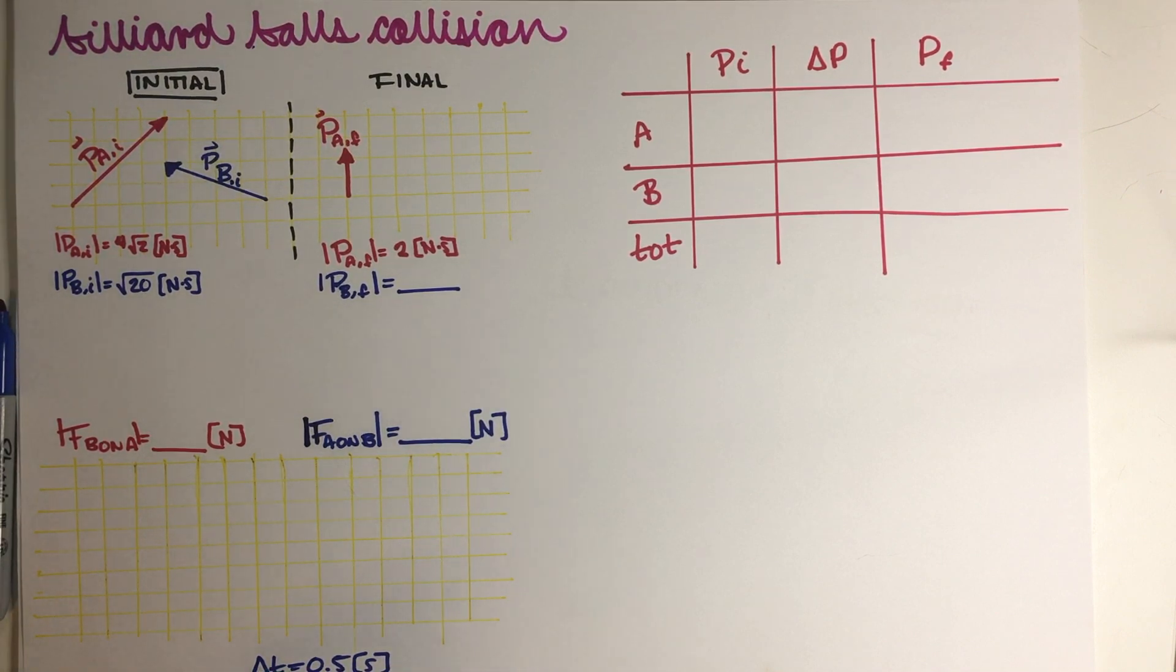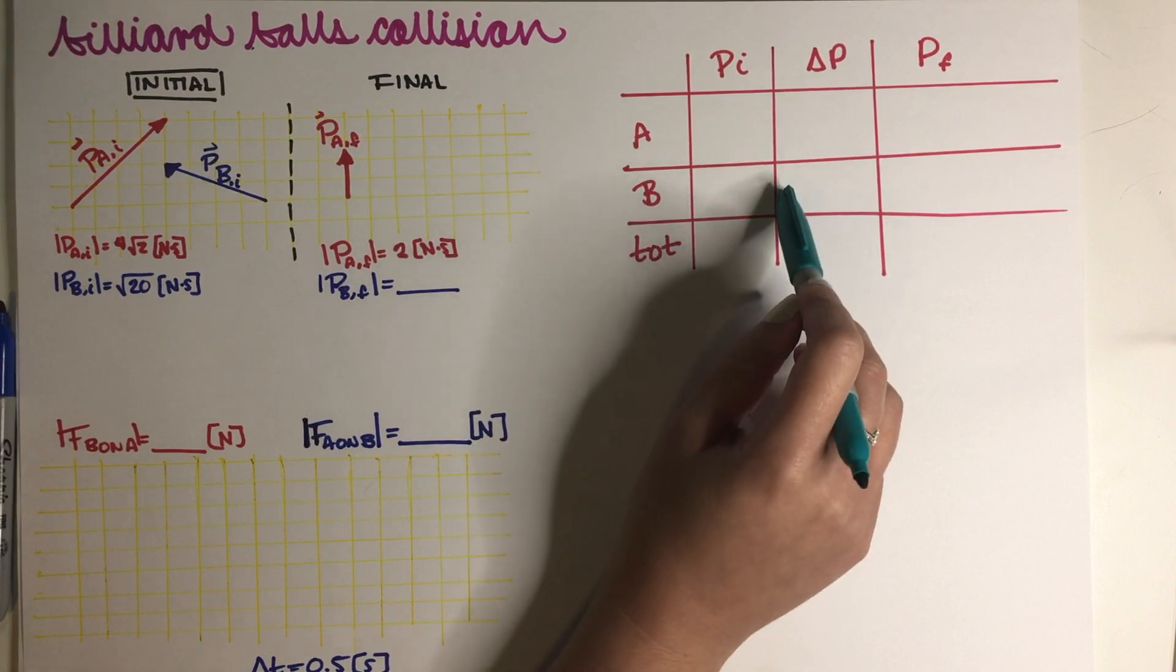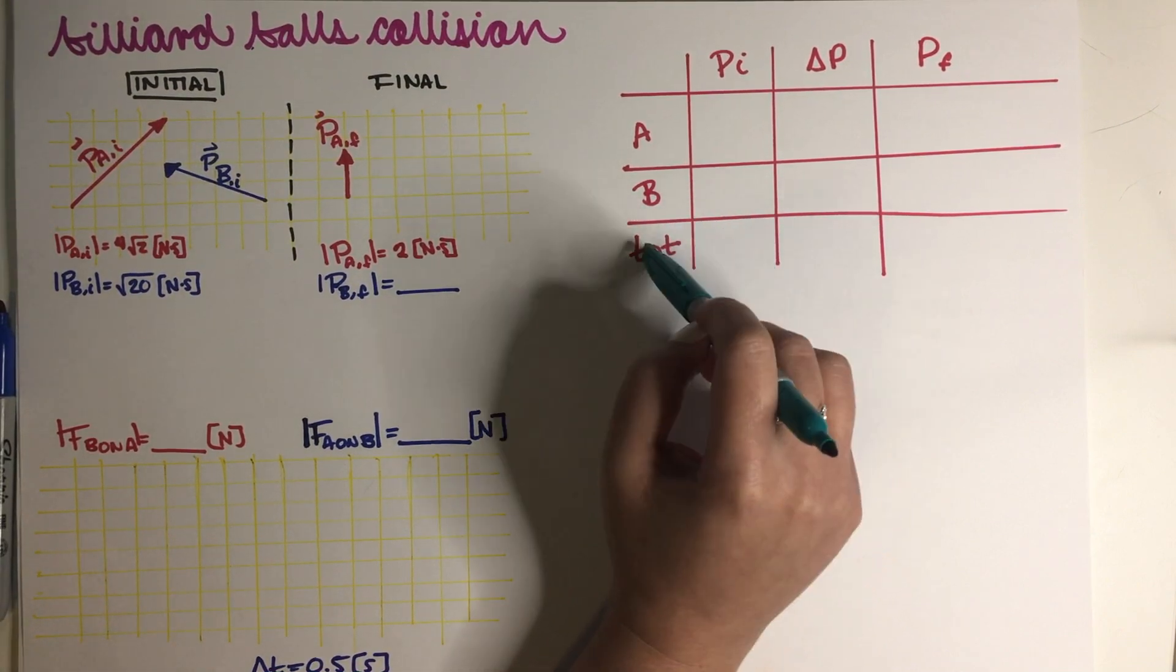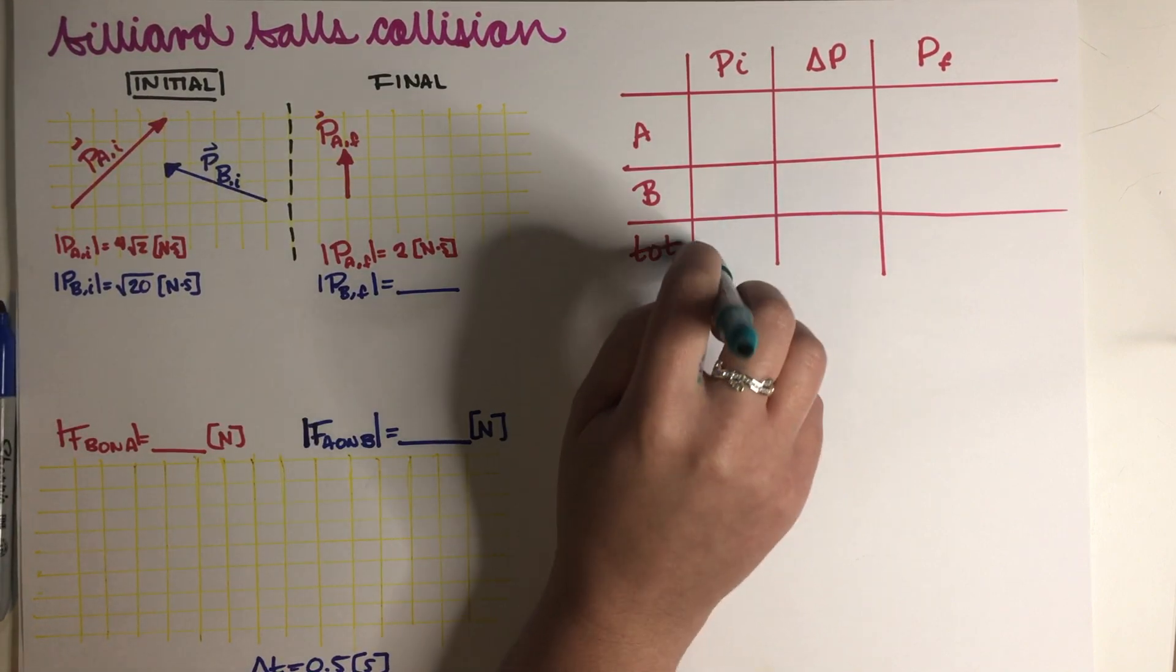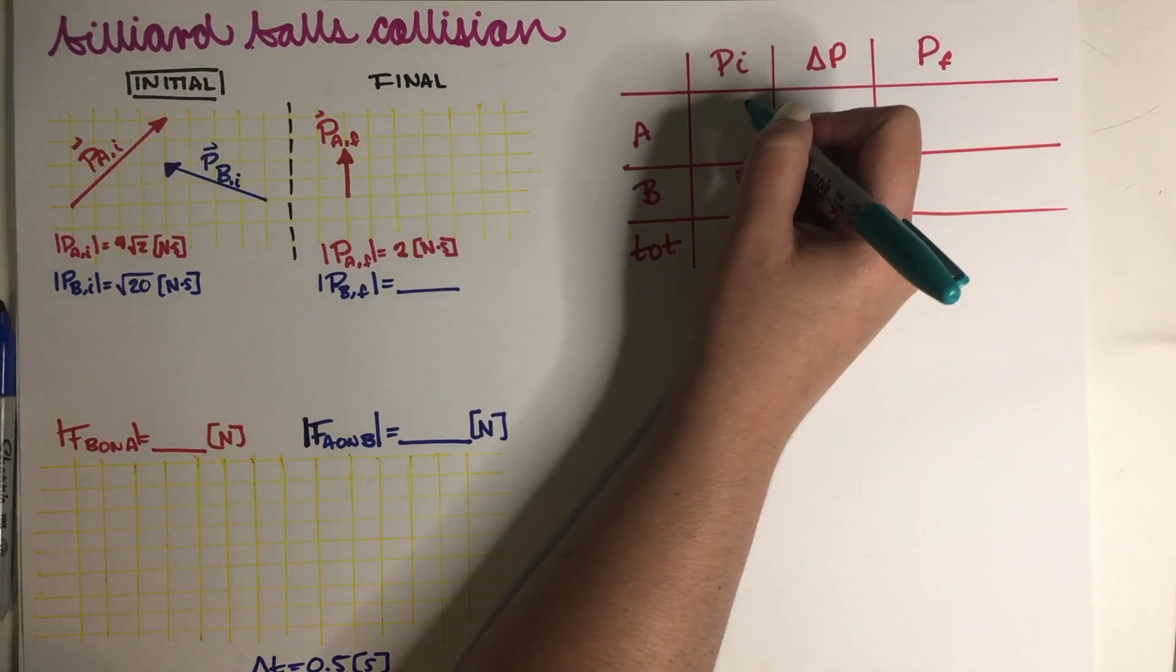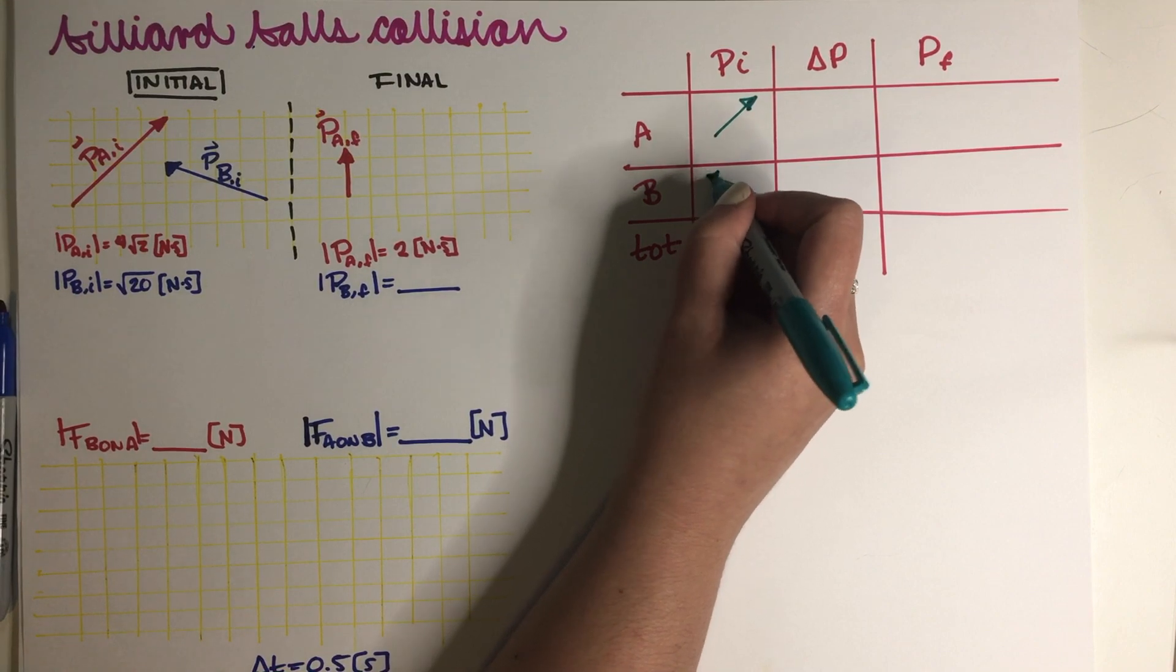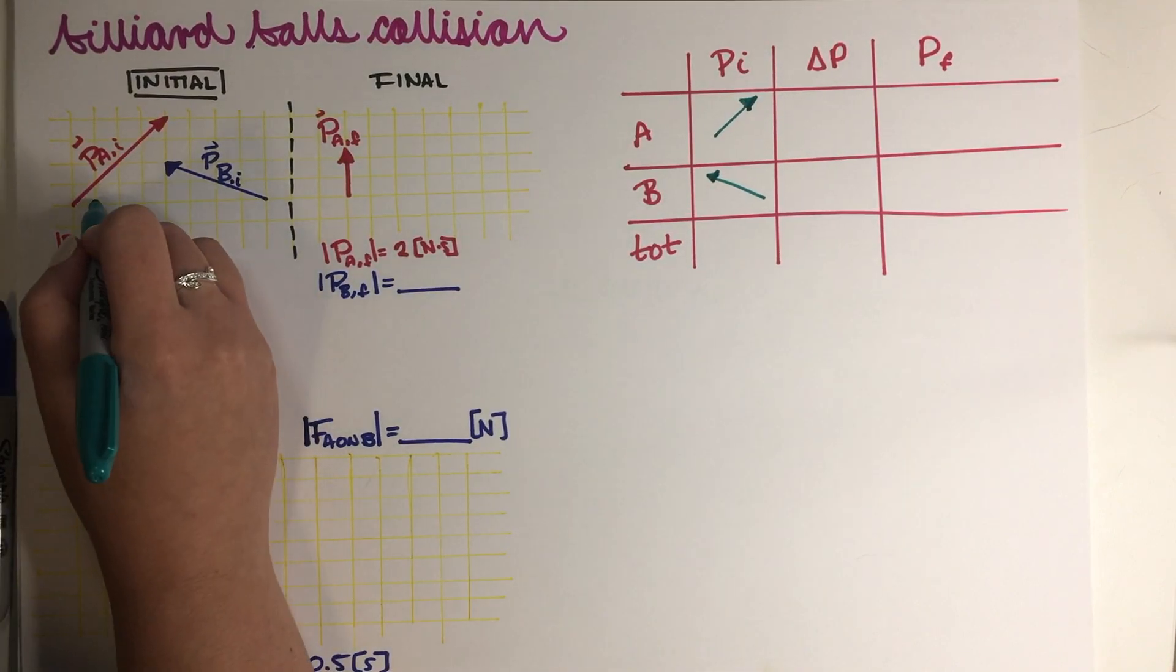So I also decided to add a momentum chart over here because, you know, we do like our momentum charts in this channel. So the first thing that I'm going to do is a momentum chart is usually better if you can have it on x and y components because vector addition works x with x and y with y. So instead of writing magnitudes over here, I'm actually going to write my vectors in x and y component.